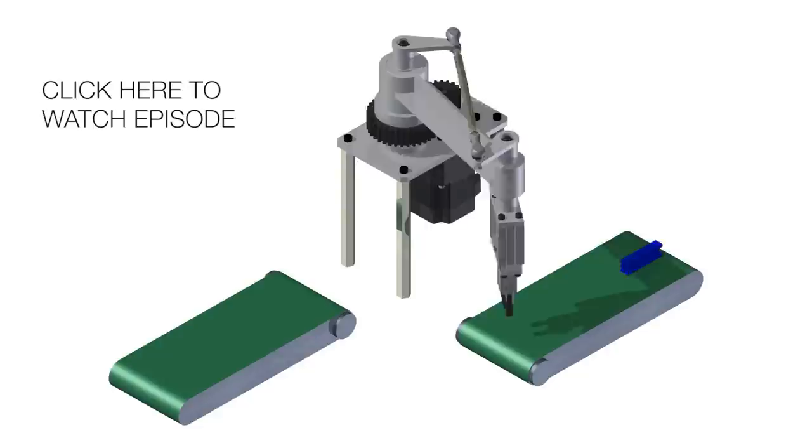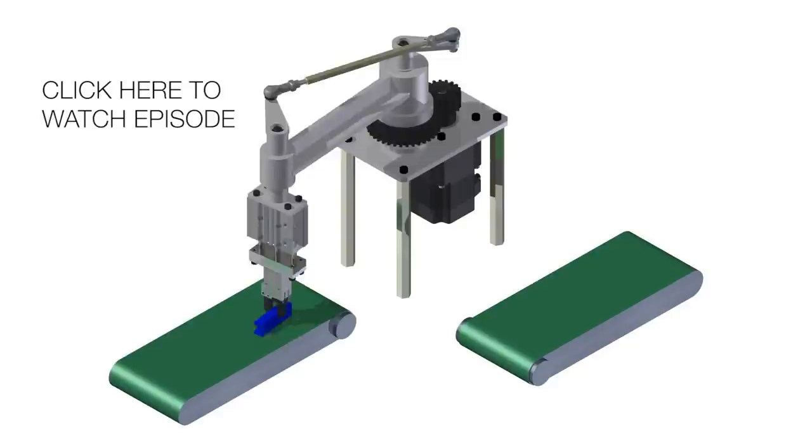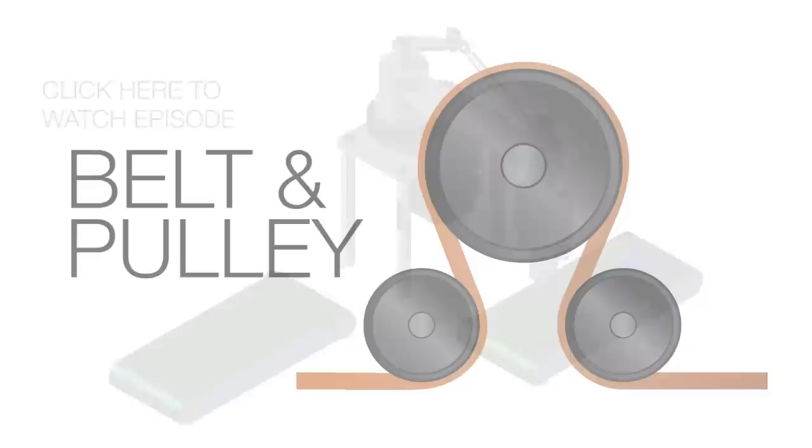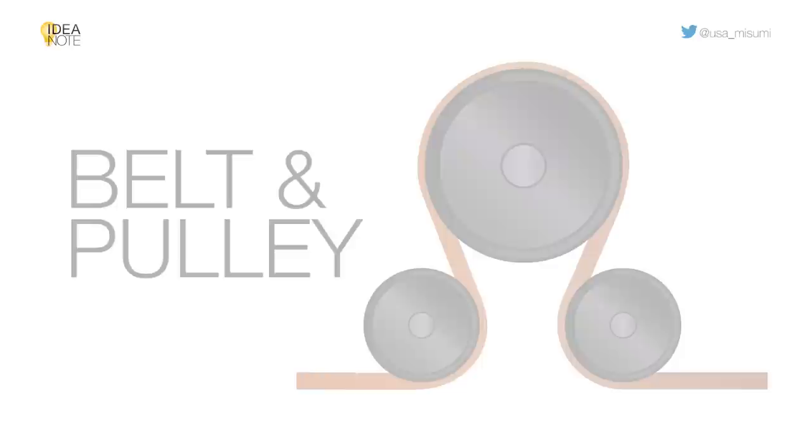In Episode 3, we looked at using a 4-bar linkage to move and reorient a part with rotational motion. Today's in-motion application will investigate another method to move a part, this time with a unique take on a power transmission classic, the belt and pulley system.